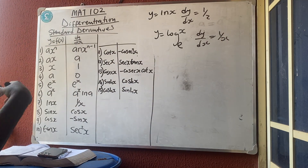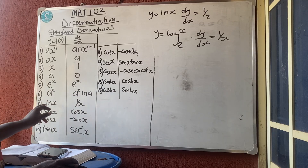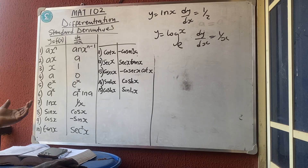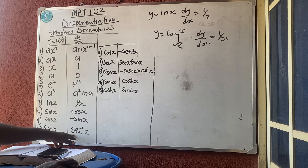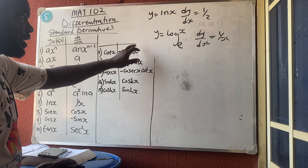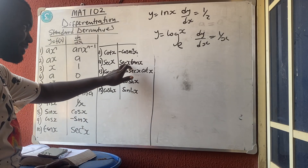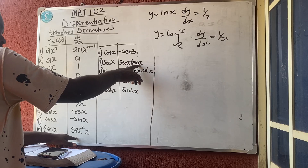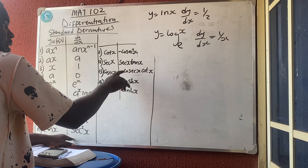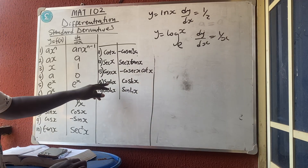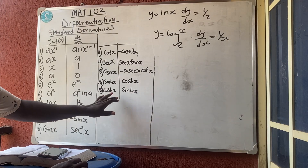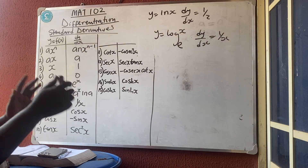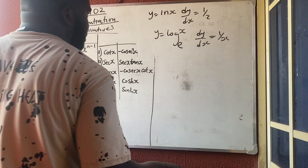You also need to memorize: d/dx(sin x) = cos x, d/dx(cos x) = −sin x, d/dx(tan x) = sec²x — we will prove this using the quotient rule later. Also, d/dx(cot x) = −cosec²x, d/dx(sec x) = sec x · tan x, and d/dx(cosec x) = −cosec x · cot x.